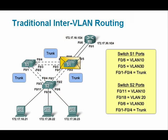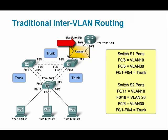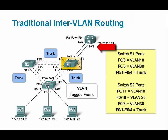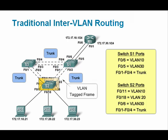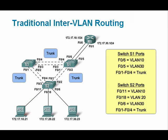In this example, packets from PC1 flow into the router's F00 interface. The routing process is then completed, and the traffic flows out of the router's F01 interface toward PC3. Note that although we have redundant trunk ports between switches, each router port only participates in a single VLAN.